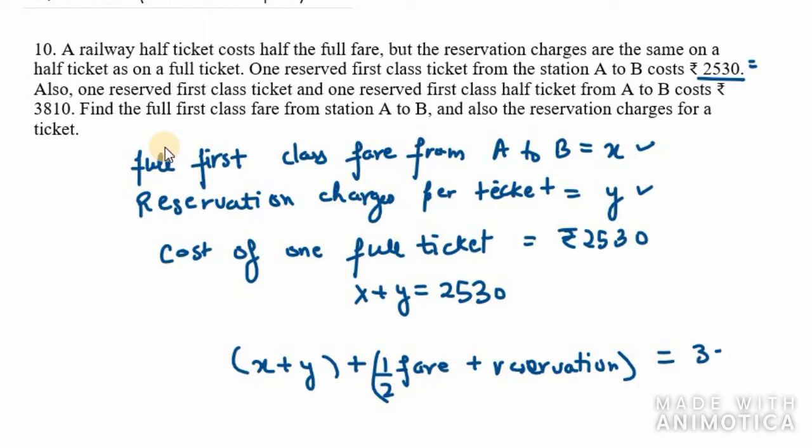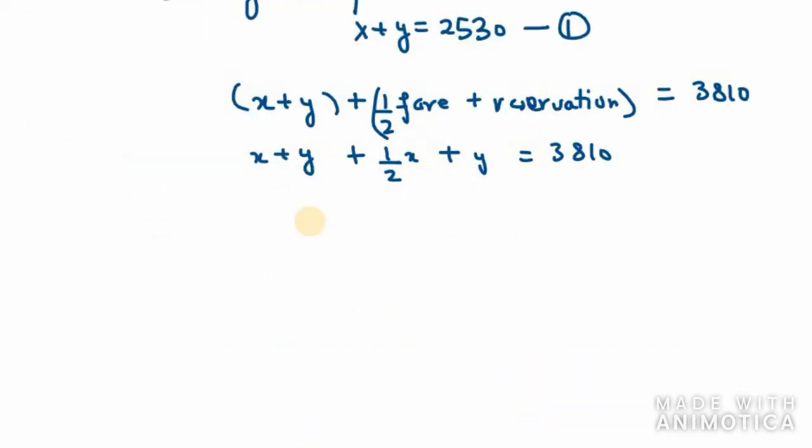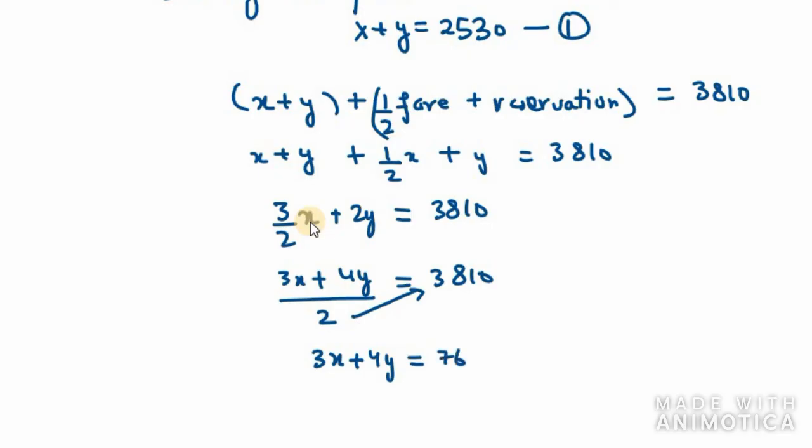This equals 3810. We need to simplify this equation. We have x plus half x, which is 3 over 2x. Y plus y will be 2y, equals 3810. Taking LCM on the left hand side, it becomes 3x plus 4y equals 3810 times 2, which is 7620. So this is equation number 2.